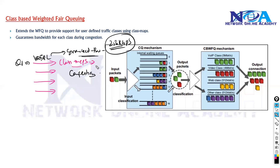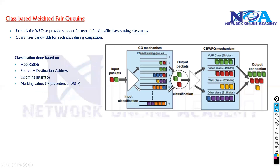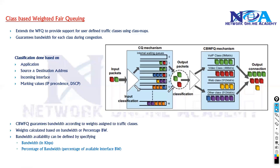Classification can be done based on application, source and destination, or incoming interface. With CBWFQ, we calculate and define the bandwidth for each queue in terms of bits per second or as a percentage of total bandwidth.